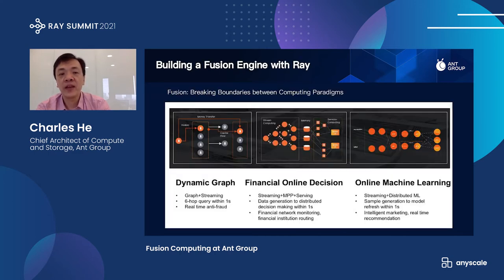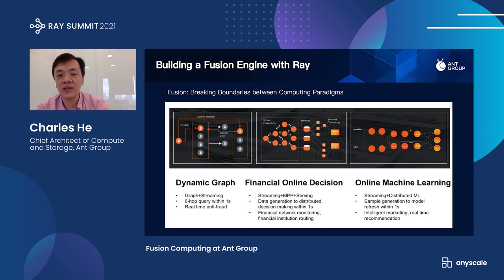As you may know, we have built a fusion engine with Ray. I talked about this at the Ray Summit last year. By fusion, we break boundaries between different computing paradigms. For example, we have built dynamic graph, online decision, and machine learning components. Within the framework, different modes of computing can interact together. So basically, we fuse different types of computing together using Ray as a core.